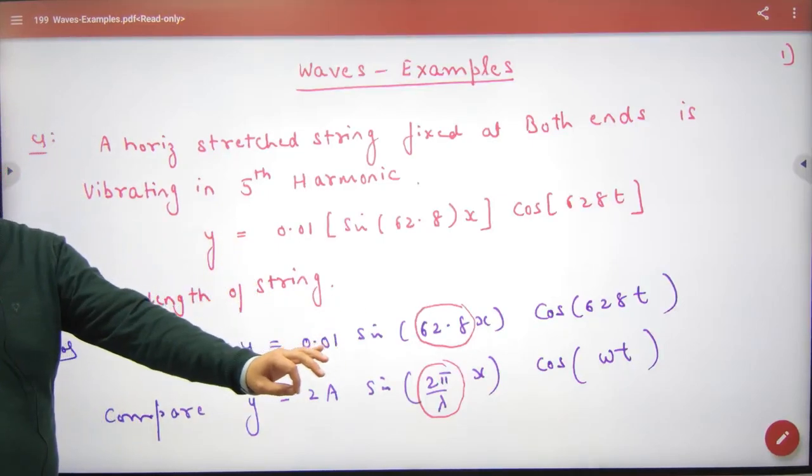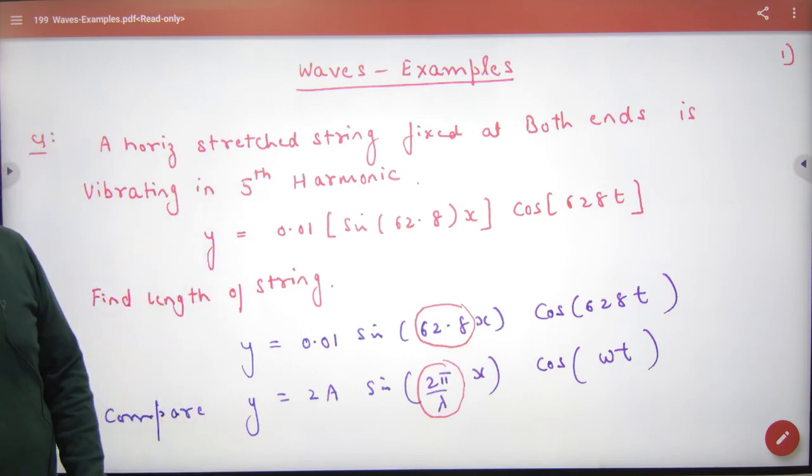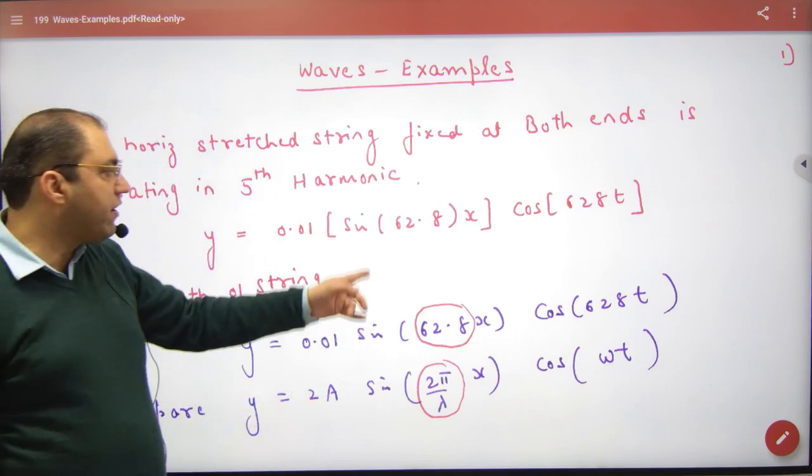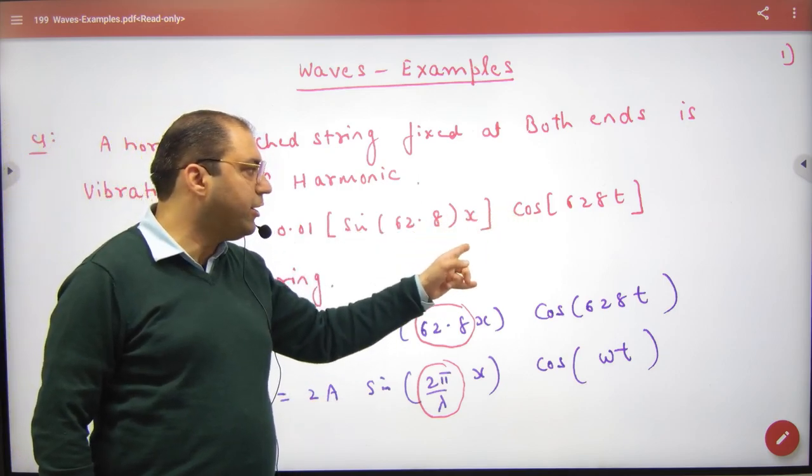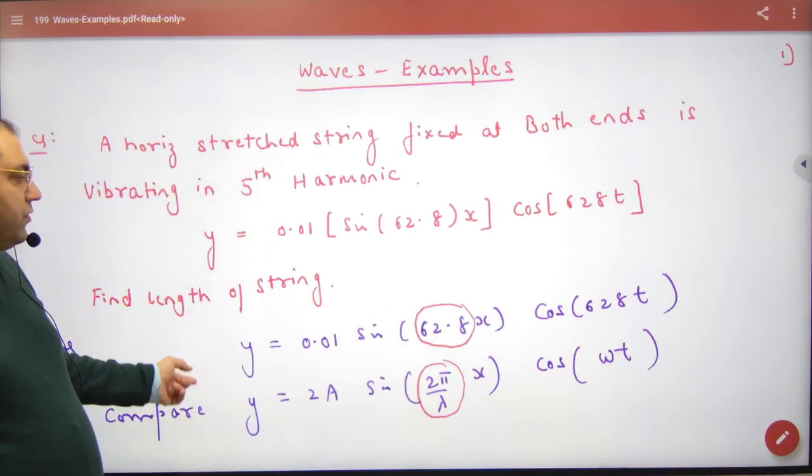A horizontal stretched string fixed at both ends vibrating in the fifth harmonic. This wave equation is a standing wave equation. We need to study nodes and anti-nodes. The standing wave is sine and cos of 2pi by lambda into x and omega t. What should we take out of this length of the string?